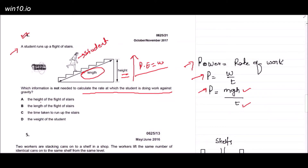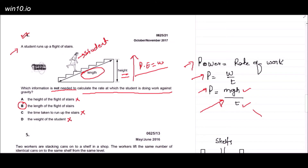Looking at the options: the height of the flight of stairs — yes, we need it, so it cannot be the answer. The length of the flight of stairs — there is no use for the length in the power formula, so it is NOT needed; that is the right answer. The time taken — yes, we need it. The weight — yes, we need it. So option B, the length of the flight of stairs, is the correct answer.